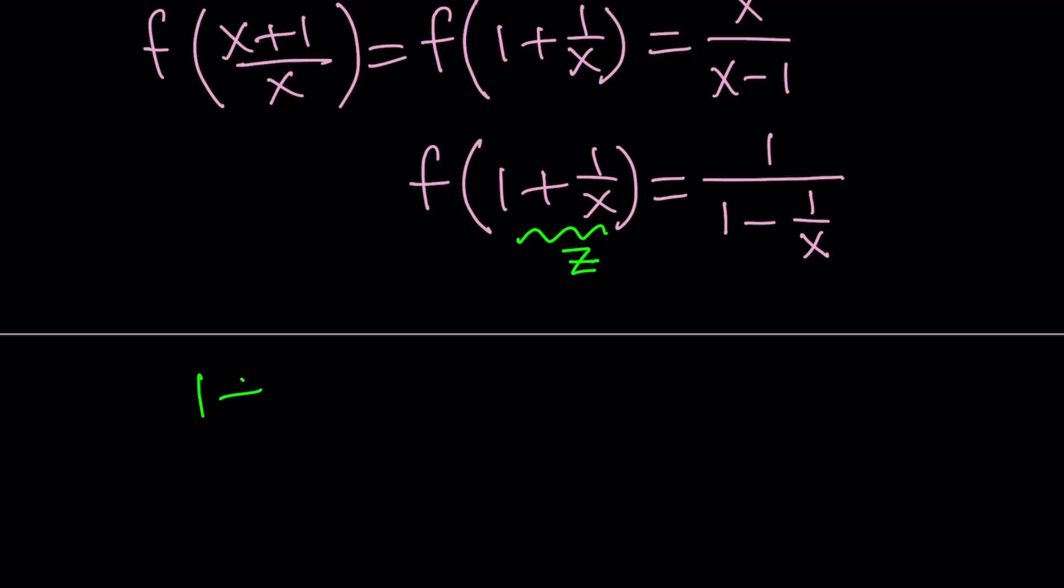What does this entail? 1 plus 1 over x equals z. Now here we're not trying to solve for x, but more like solving for 1 over x, because that's going to be good enough. So from here 1 over x is going to be z minus 1. Let's go ahead and use that on both sides.